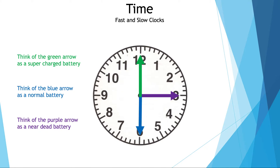Now that we have finished this visualization: the green arrow, which was the faster one, went all the way around and completed a full circle because it was going faster. The blue one only went half a circle because it was going at normal speed. And the purple one, which was going slower, only went a quarter of the way.